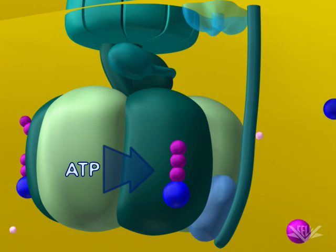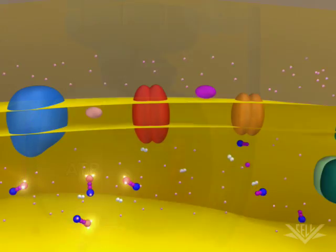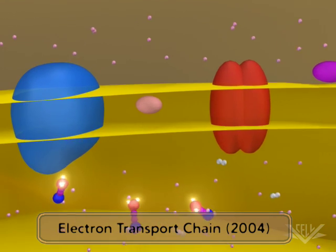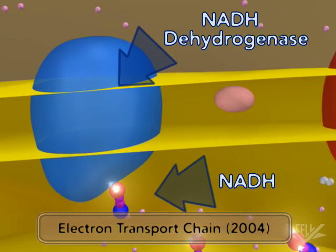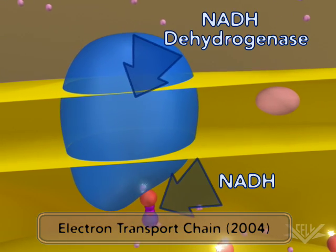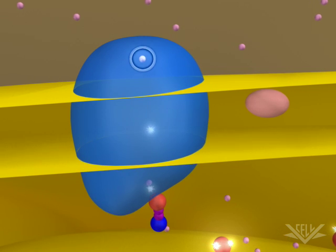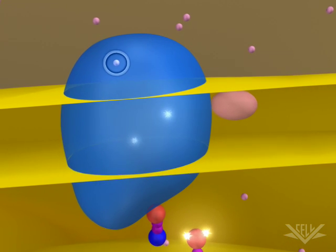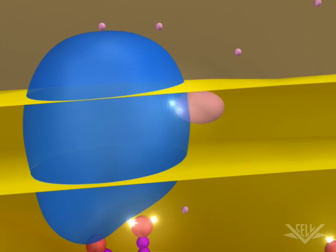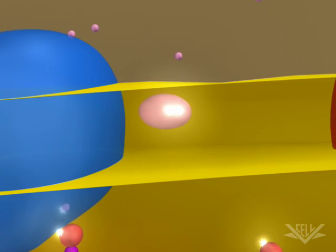This gradient is produced by the action of the electron transport system. As electrons are passed from one carrier to another in the system, protons are pumped across the membrane. This creates the gradient required for ATP production. Here, we can see the electrons moving between the carriers.